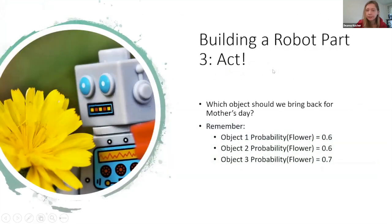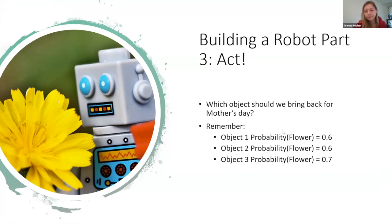Our robot has to make a decision — it has three objects and we need to figure out which one to bring back for Mother's Day. Go ahead and put in your answer: object one, two, or three? Pretty much everybody is saying object three — the higher the probability, the more likely it's a flower, so we pick object three. Objects one and two had equal probabilities of 0.6, and we can discuss whether that seems right, but based on our robot's algorithm they were equal.